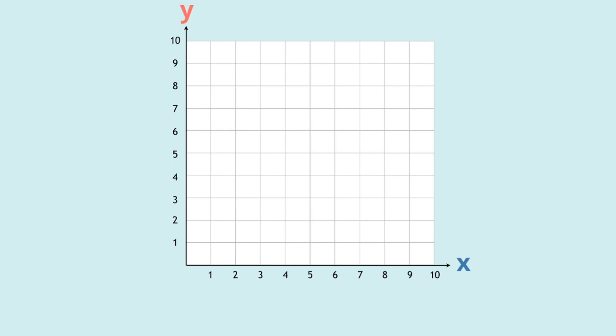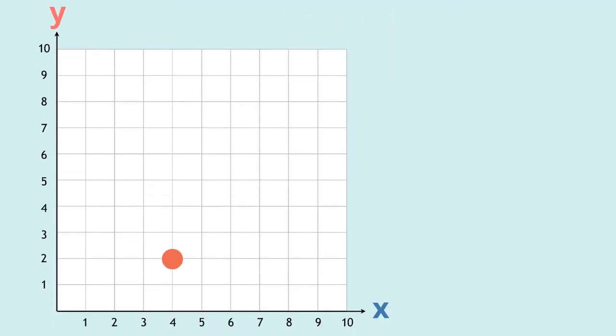There's a very specific way of recording where that point is, so pay attention to this part. The red dot in this grid marks the point (4, 2). Do you see how I wrote that?